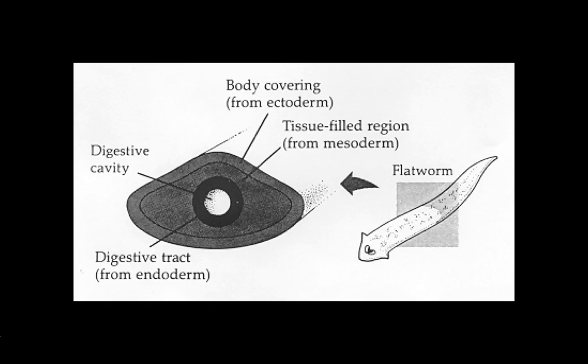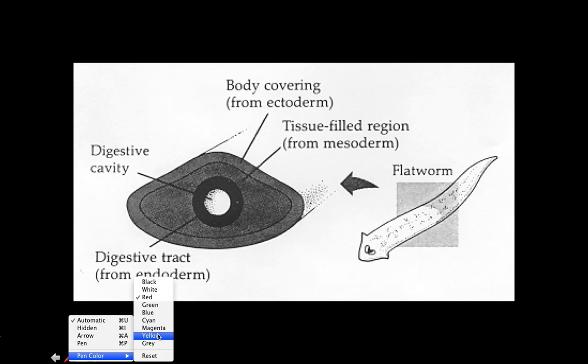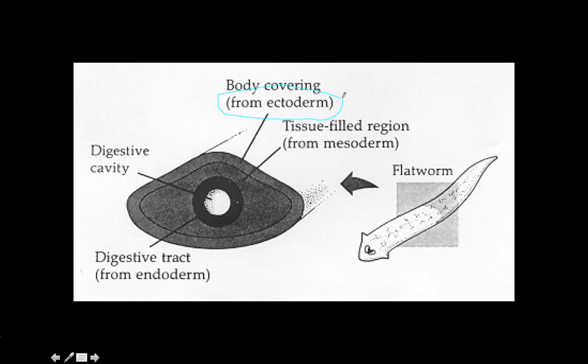What you see on this slide is that these organisms have three tissue layers. That is what I would add to my notebook — write down that they have three tissue layers: the ectoderm, the mesoderm, and the endoderm. You should also note they do not have a coelom; they do not have a body cavity.